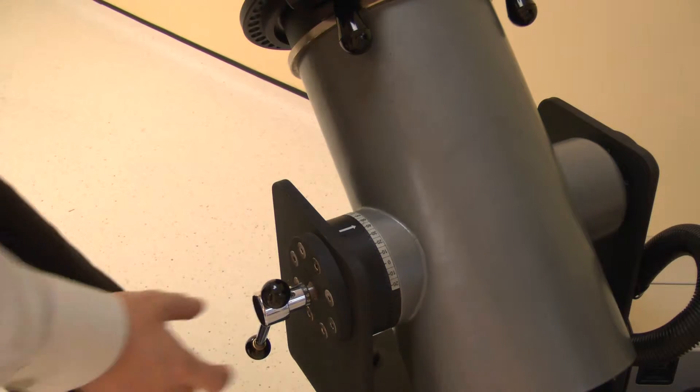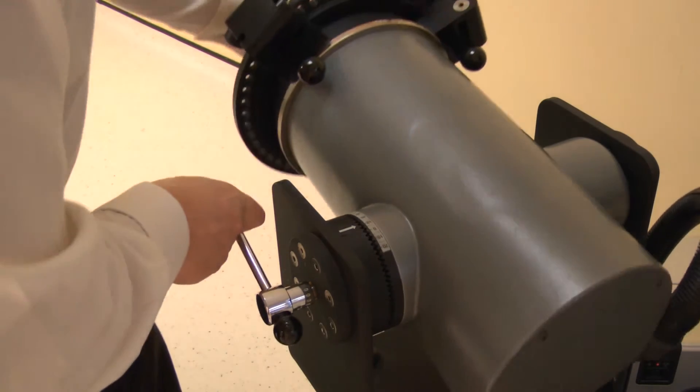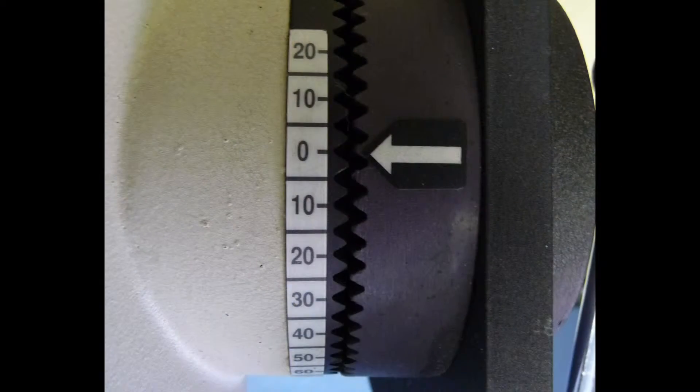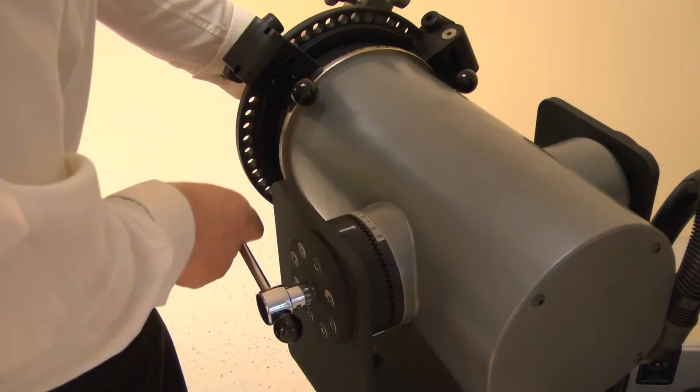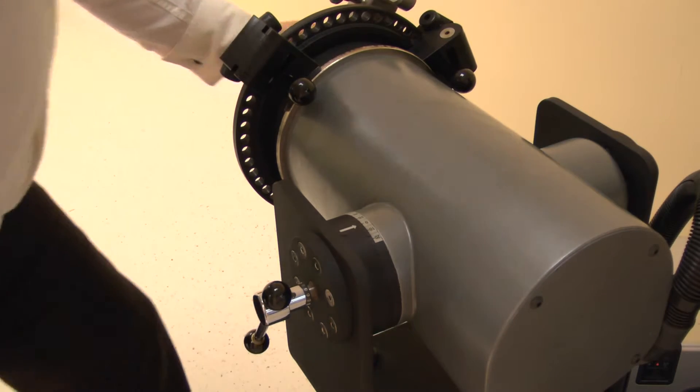Now set the dynamometer tilt. Release the locking handle then change. Adjust the tilt angle to 0 degrees. Lock by tightening the handle.